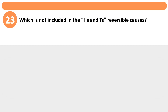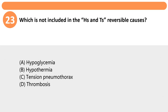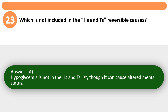Which is not included in the H's and T's reversible causes? A. Hypoglycemia. B. Hypothermia. C. Tension pneumothorax. D. Thrombosis. Answer: A. Hypoglycemia is not in the H's and T's list, though it can cause altered mental status.